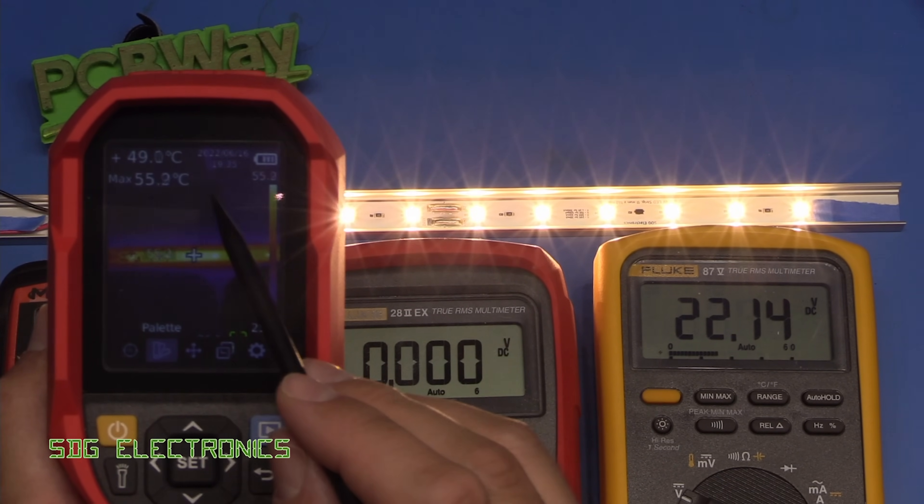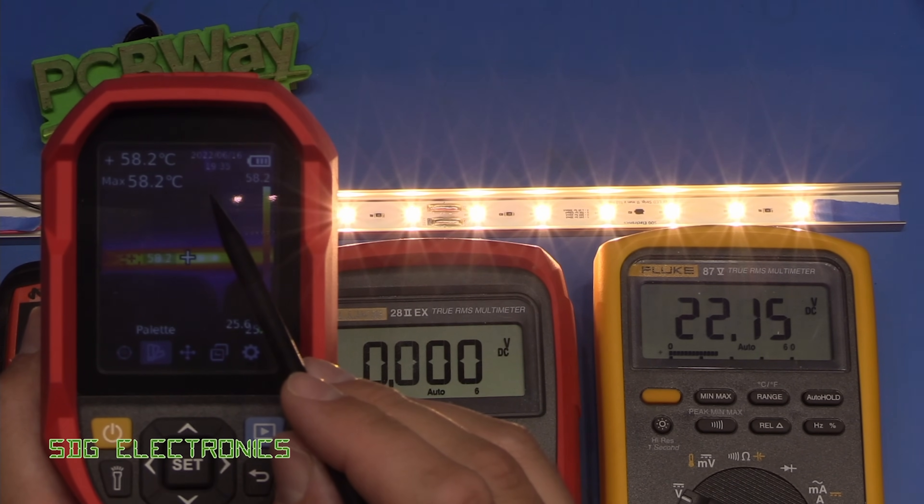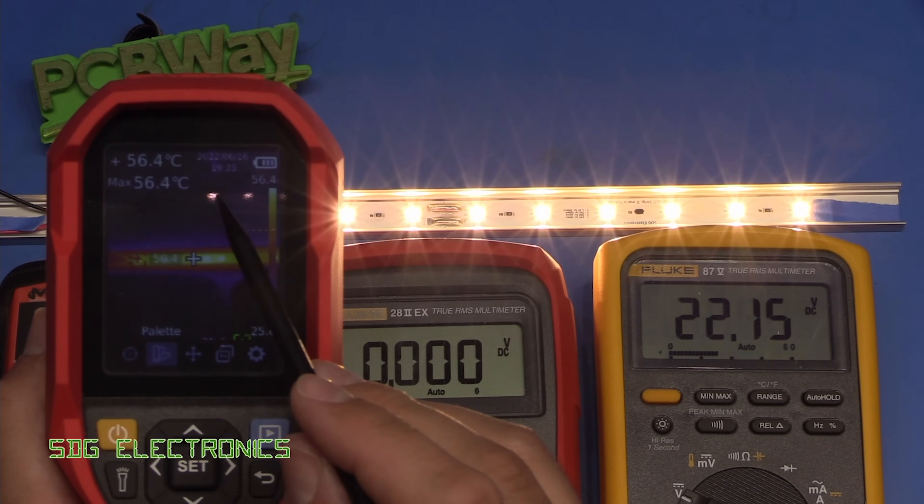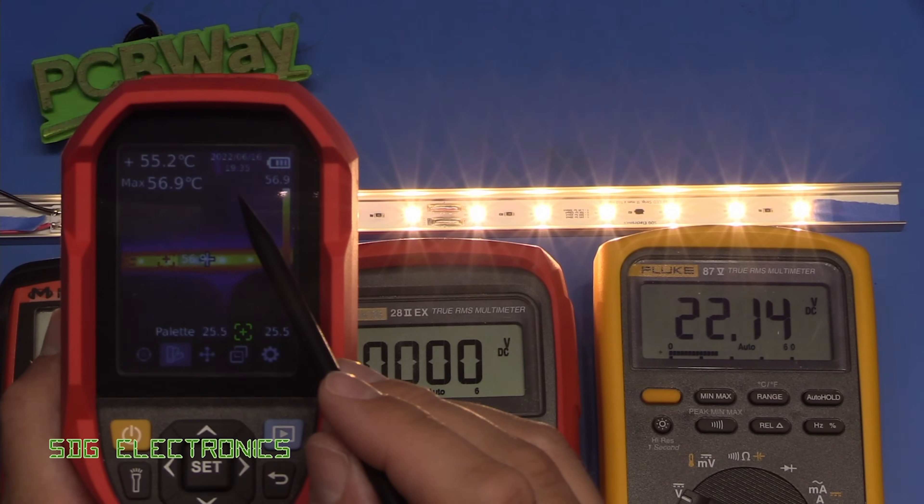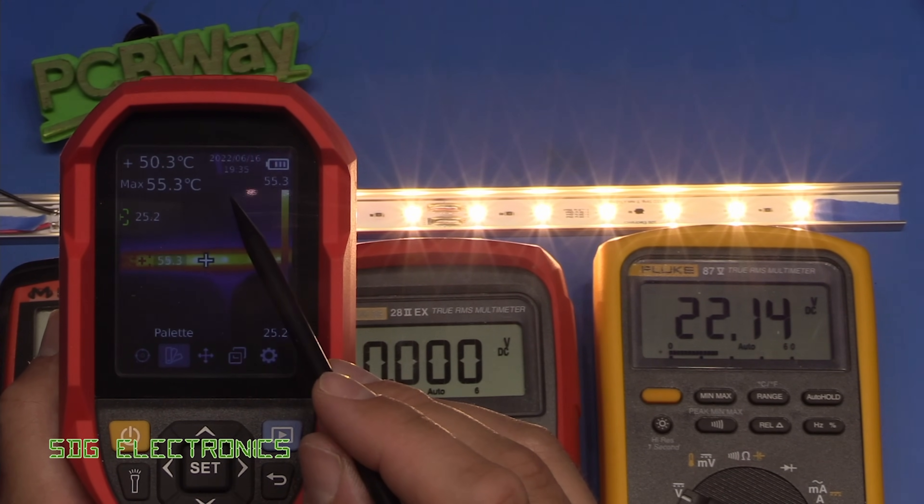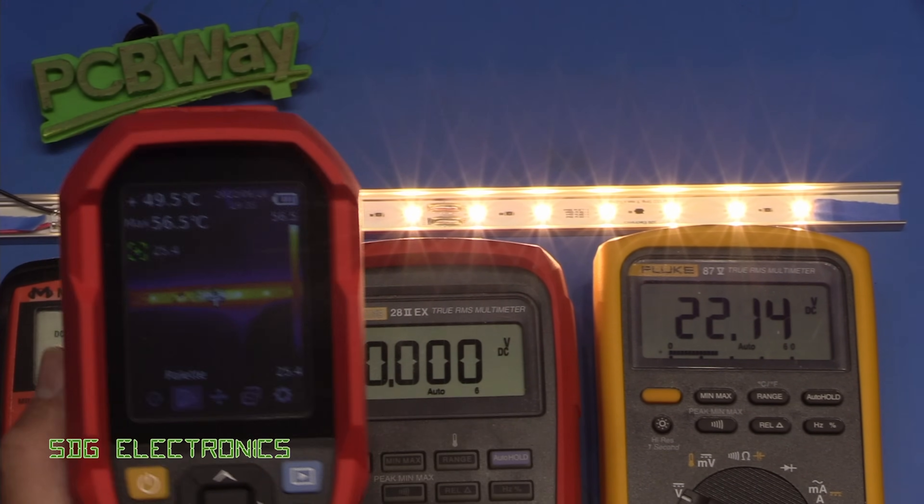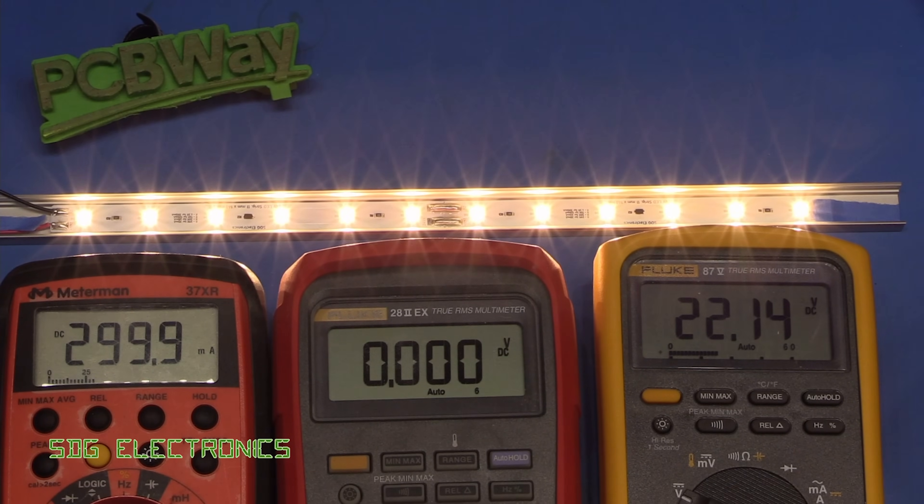that LED is running at about 58 degrees C and the constant current diode about 52. So really not any concerns there about the temperatures.